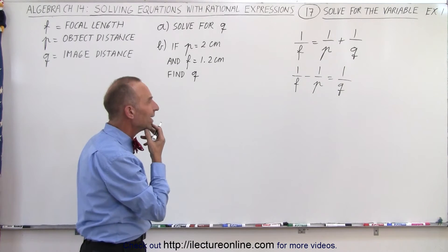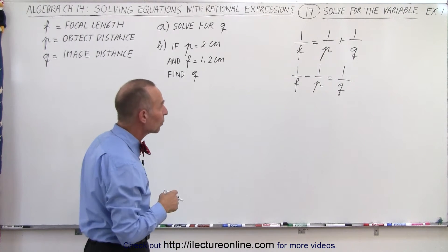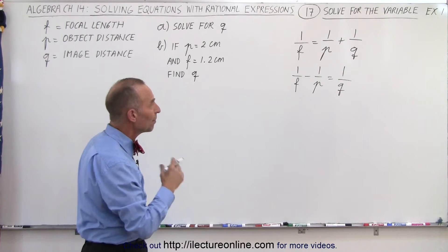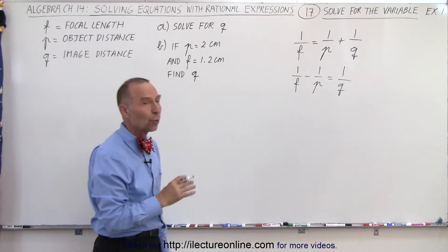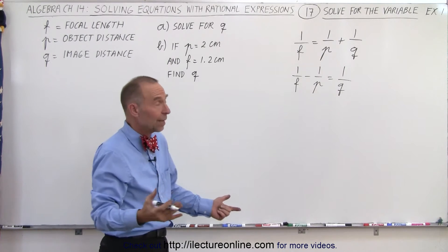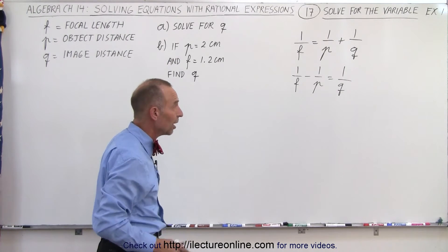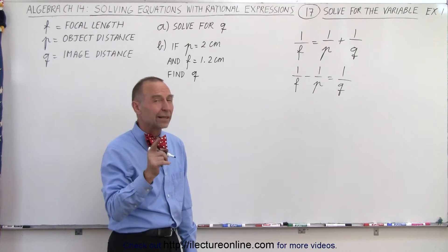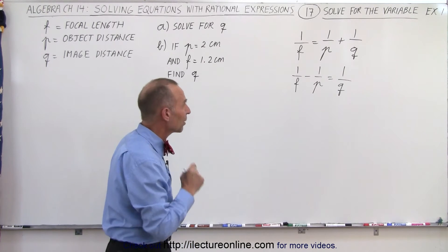Now, the next thing, there's two approaches we can take. We can use our general approach by multiplying both sides of the equation by the lowest common denominator. In this case, the lowest common denominator is going to be the product of all the denominators. So, let's try that. Let's go ahead and try to do it that way.